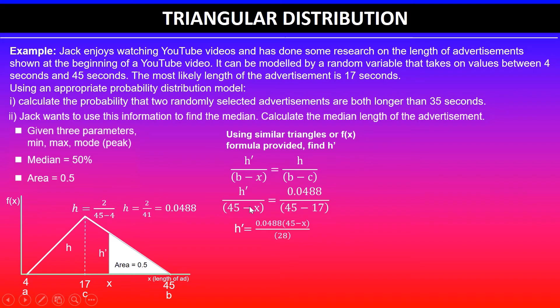We take 45 minus x on the other side because we are finding the value for h'. So that is equal to 0.0488 times 45 minus x. It's divided on this side, so I'll take it on the other side and multiply.